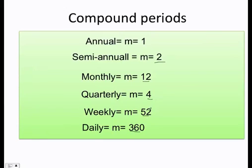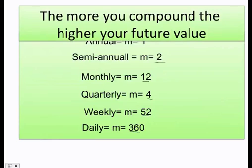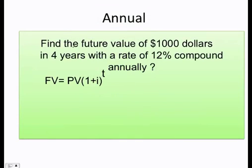For right now, let's just start with some examples. Also, the more you compound, the higher your future value. Let's start. Let's say we have a problem like this: find the future value of $1000 in 4 years with a rate of 12% compound annually.